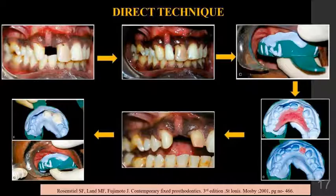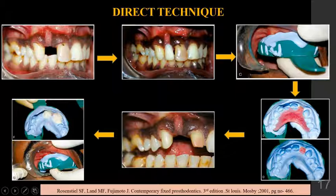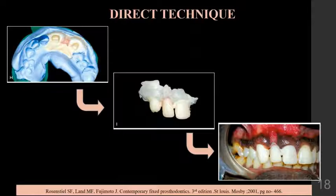The direct technique involves the use of a mold or matrix. These matrices can be made from different materials like polyvinyl siloxane putty or vacuum-form materials, and can be prepared on a diagnostic cast or intra-orally. After the matrix is prepared, tooth preparation is done. The matrix is then tried in the patient, the provisional restoration material is mixed, and the matrix is seated on the prepared tooth surface. During polymerization, an on-off technique and water coolant can be used to reduce heat.